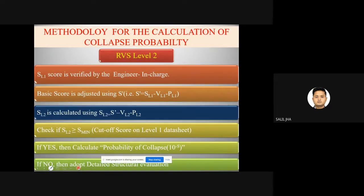A check is done: if RVS Level 1 score (SL1) ≥ cutoff score on the Level 1 data sheet, we proceed to RVS Level 2 (optional, requires an expert); if not, we adopt detailed structural evaluation. In RVS Level 2, the SL1 score is verified by an expert engineer. The baseline score is then adjusted using the formula: S = SL1 - VL1 - PL1, where S is the adjusted baseline score, VL1 and PL1 are the vertical and plan irregularities from the Level 1 data sheet.